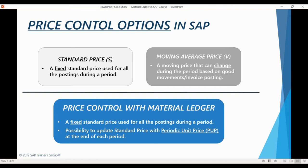When you are using a moving average price control, a new material price is calculated after every goods receipt, invoice receipt, or order settlement. This material price is an average value calculated using the total inventory value and total quantity of the material in stock. It is common that certain raw materials can be purchased from multiple vendors at different prices. In these cases, using a moving average price can help maintain an accurate valuation price without constantly manually changing the standard price when there is a lot of fluctuation in raw material prices. However, most companies prefer to value also their raw materials with standard prices.